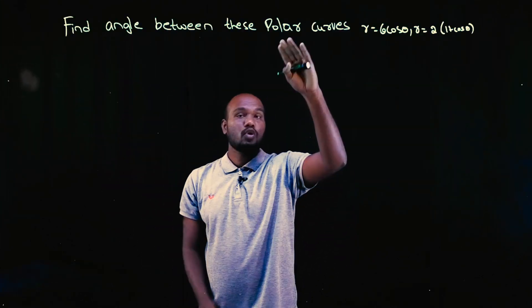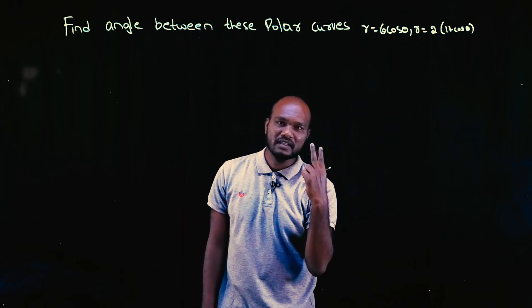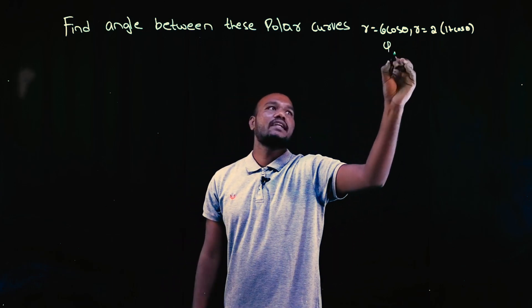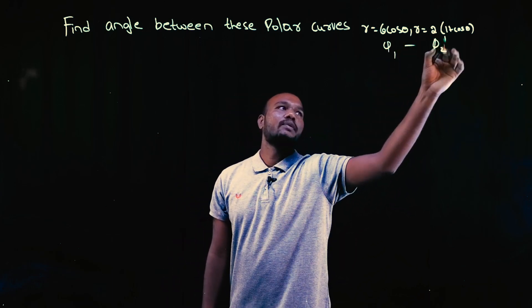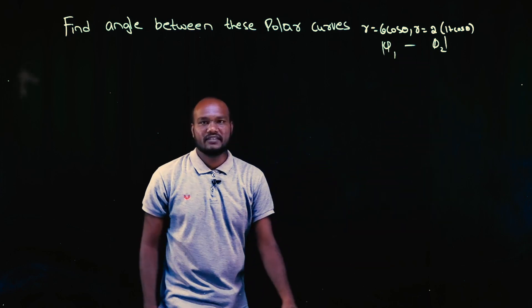What is the question given? Find the angle between these polar curves, this and this. There are two polar curves. We have to find φ1, we have to find φ2, φ2 minus φ1, that's what they are asking for.